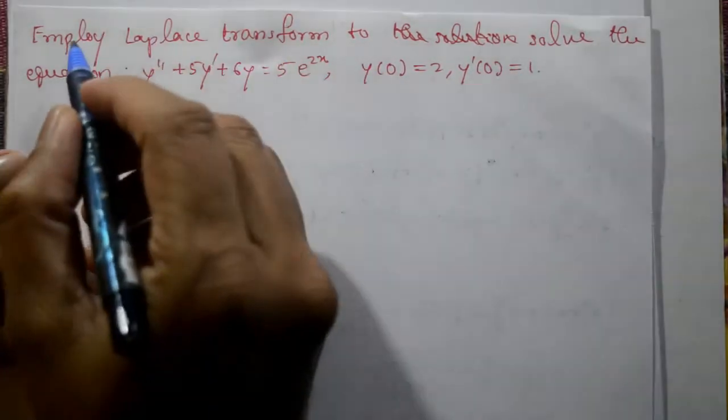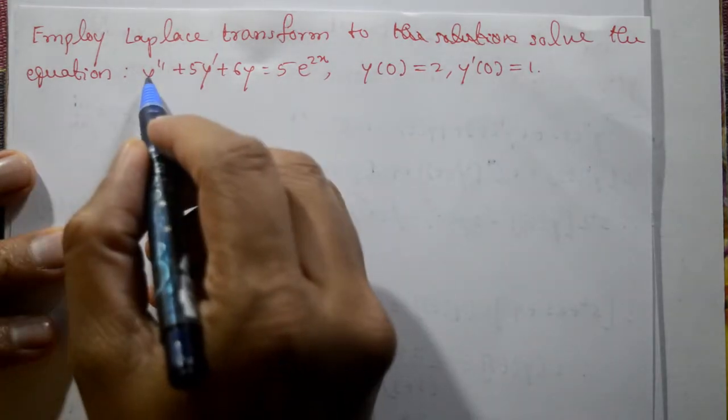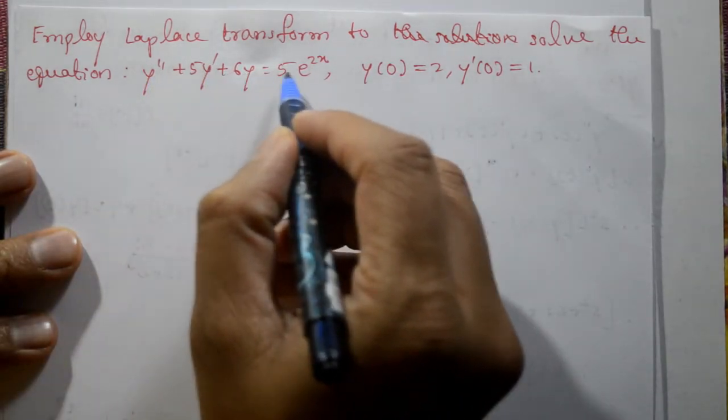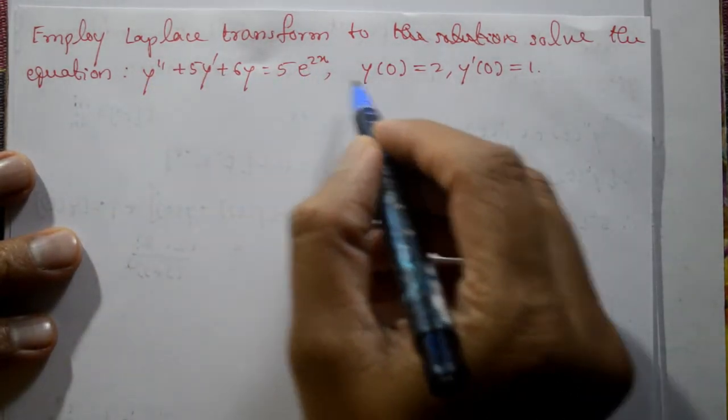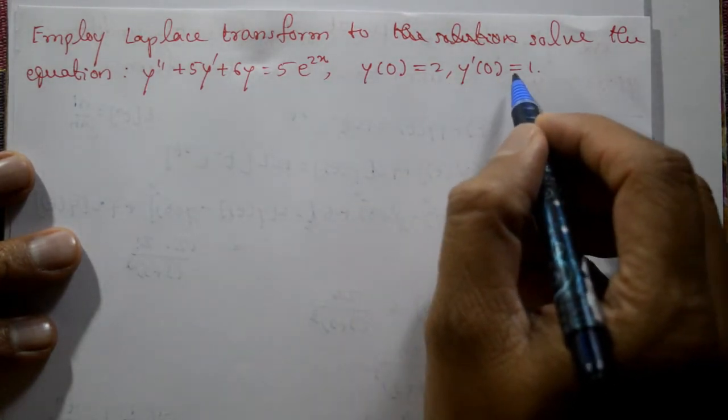Welcome friends, this problem we will solve using employ Laplace transform to solve the equation y double dash plus 5 y dash plus 6 y equal to 5 into e raise to 2x. The initial conditions given are y of 0 is equal to 2 and y dash of 0 is equal to 1.